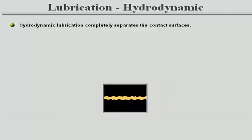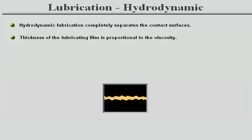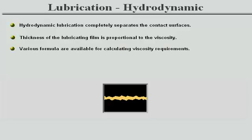Hydrodynamic lubrication is achieved when the relative speed of the surfaces is sufficiently high to form an oil film significantly thicker than the surface roughness, separating the two surfaces. The thickness of the film is proportional to the lubricant viscosity. Therefore, higher viscosity is required for heavy load, low speed, high temperature, or conditions involving shock loads or vibrations. Various formulas and nomograms are available for calculating the lubricant viscosity requirements.